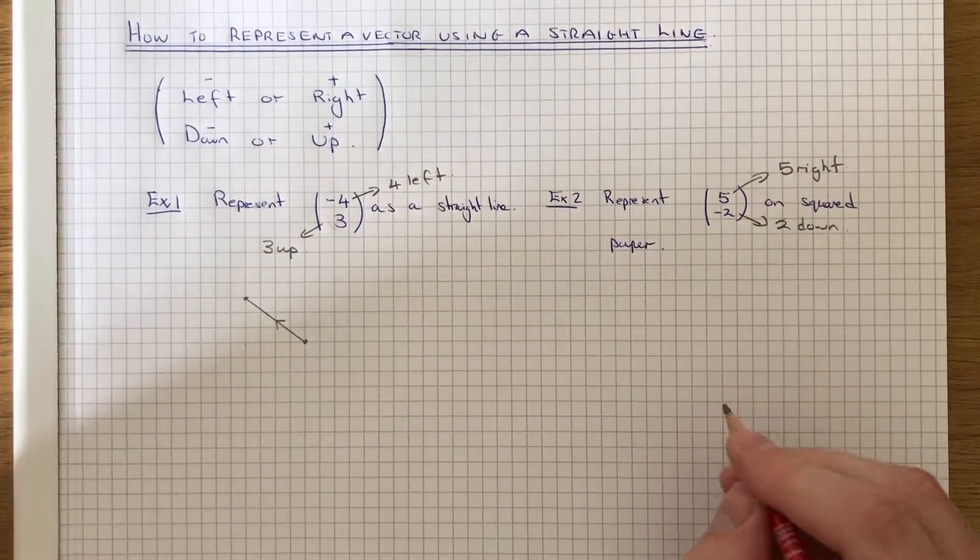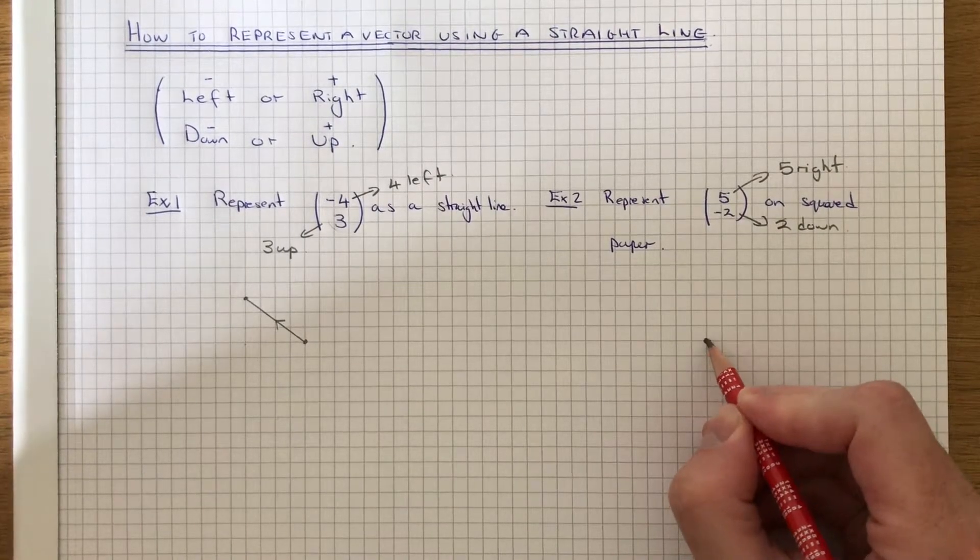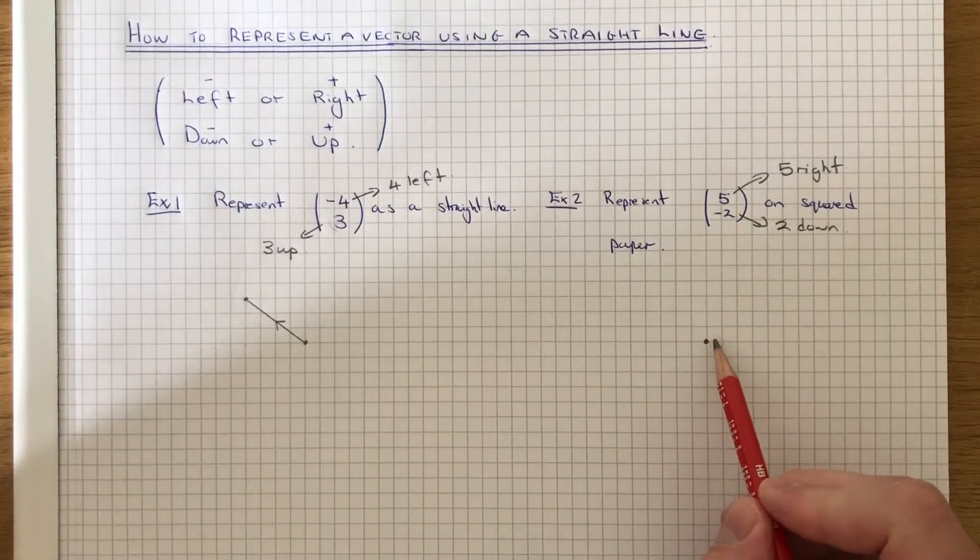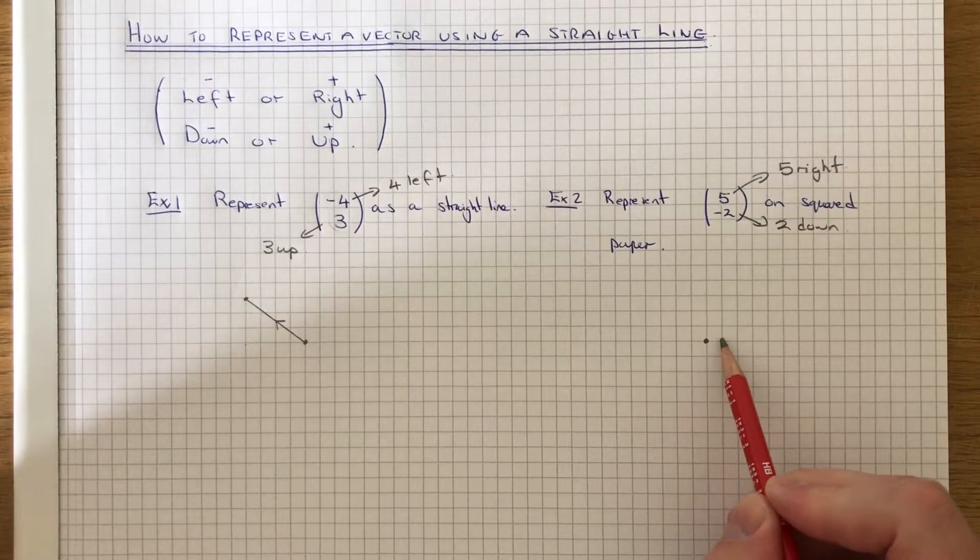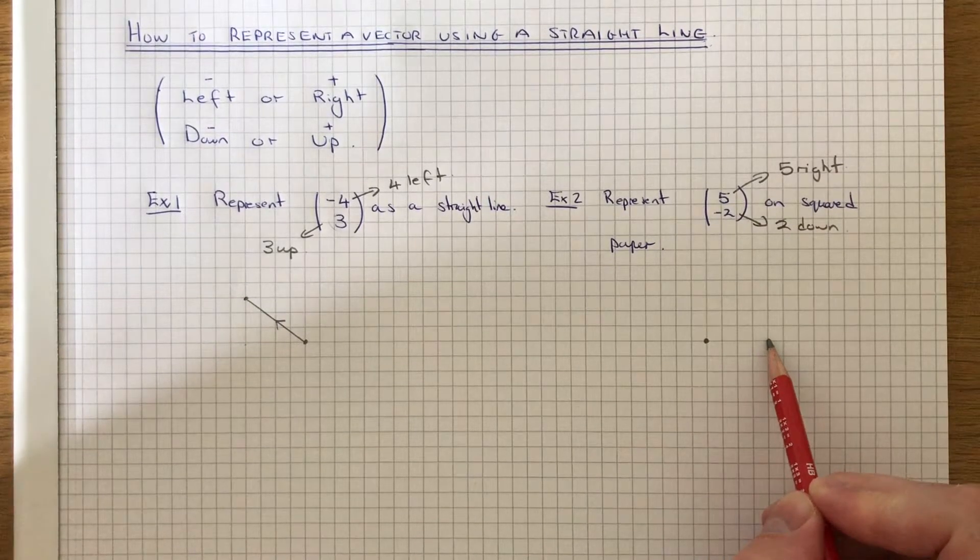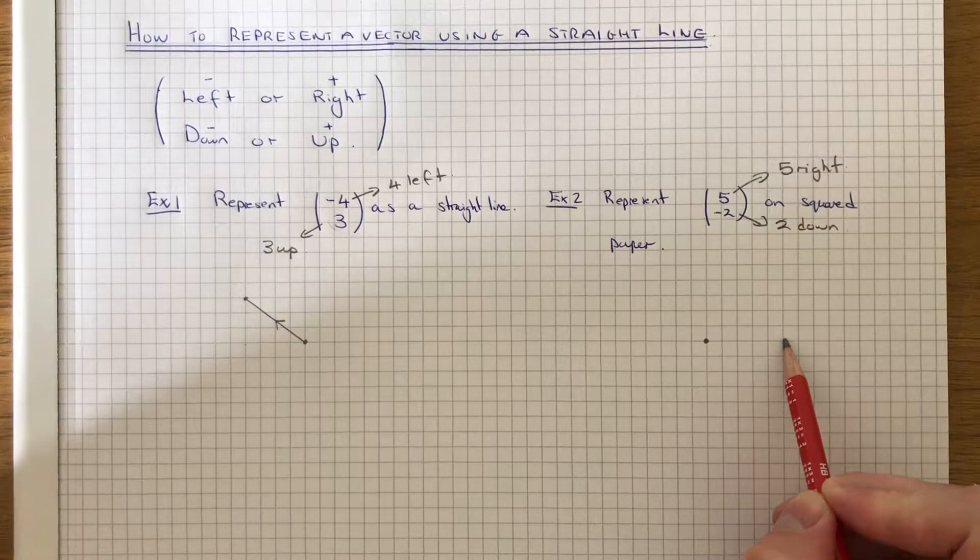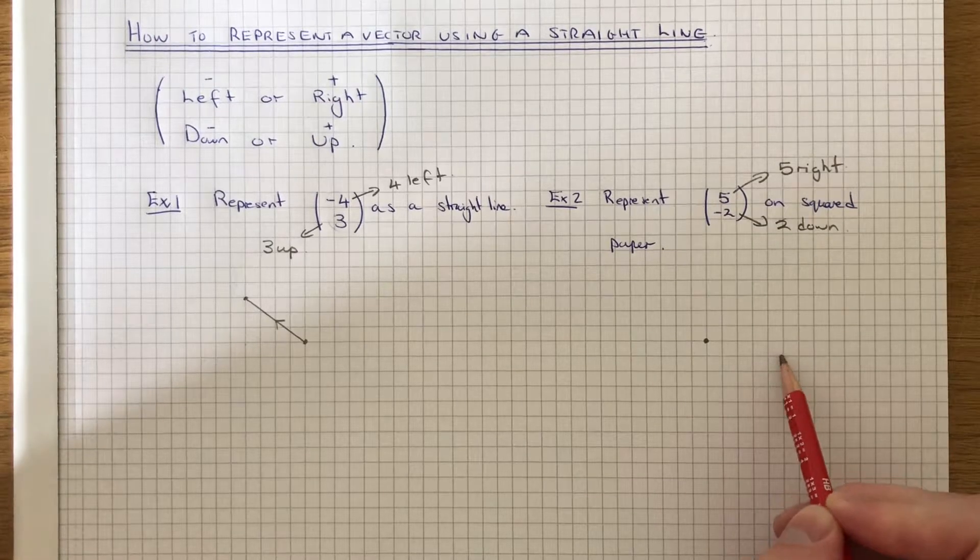Again, if we pick a point on the page, we've got to move this point 5 to the right: 1, 2, 3, 4, 5. And then 2 squares down: 1, 2.